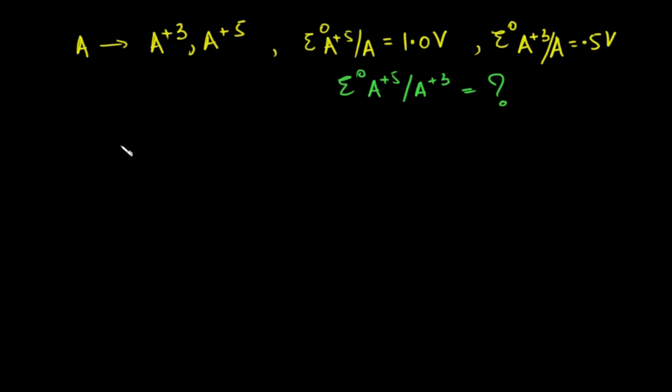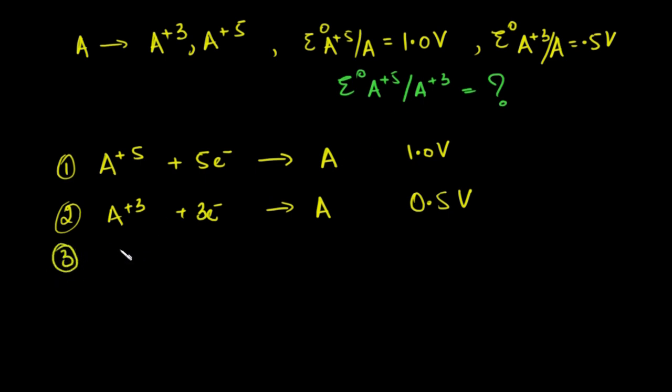If we look at this, when A+5 goes to A, the reaction is A+5 + 5e- → A, and this is 1.0 volt. This is the first reaction. Second reaction is A+3 + 3 electrons gives A. This is 0.5 volt. The third, the desired result, is A+5 to A+3. If we look at that reaction, A+5 to A+3 requires 2 electrons, so I'll write this as x volts. We need to find x.